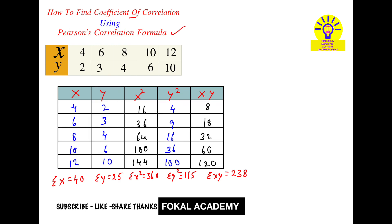Now write Pearson's correlation formula. This is the formula for calculating the coefficient of correlation using Pearson's method — this is called Pearson's correlation formula. Now substitute all these values into the equation. We get r equal to — first, I am going to calculate the numerator individually.